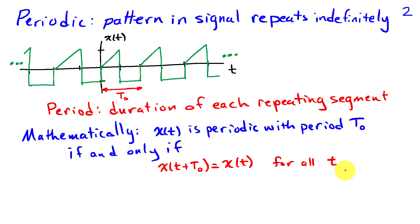And this for all time t is the indefinite repeating part of my definition in words up above. So here's an example of a signal that doesn't repeat indefinitely.